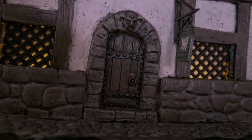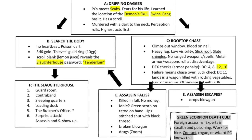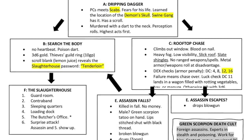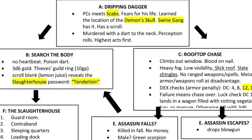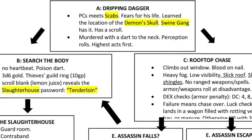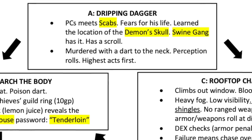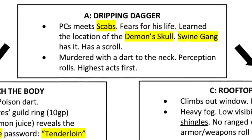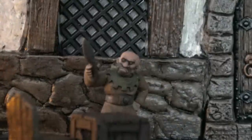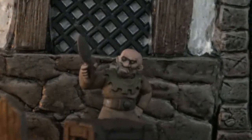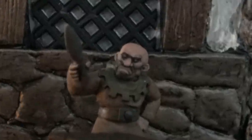The scenario begins at A, the Dripping Dagger, a seedy tavern in a seedier section of town. There the player characters meet Scabs, a low-level thief and member of the Thieves' Guild. He's sweaty and nervous looking and fears for his life. It would be best if the characters knew Scabs before this — maybe you introduced him two or three sessions ahead of time so he doesn't come out of nowhere. He's looking around furtively and reveals that he's found the location of a dangerous artifact, the Demon's Skull.